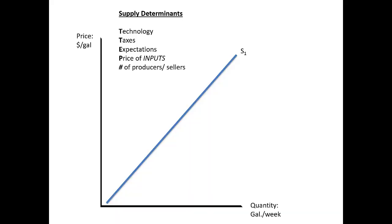Now let's conclude our talk about the supply curve by thinking about how shifting the supply curve works in the graphical space. Here we have an upward-sloping supply curve — which, as you'll recall, is typical. It doesn't have to look that way, but that's pretty common. And that supply curve is going to shift to the left or the right if there's a change in one of these five determinants of supply.